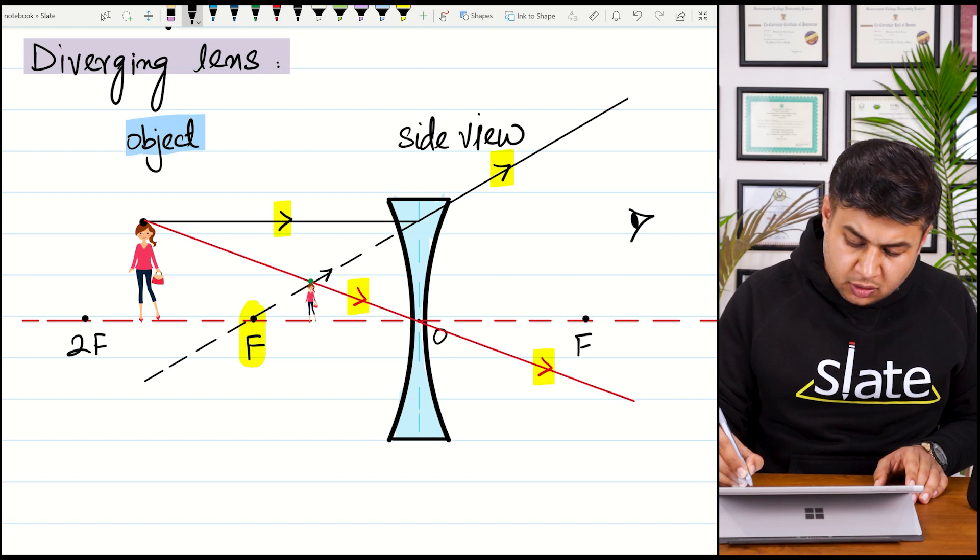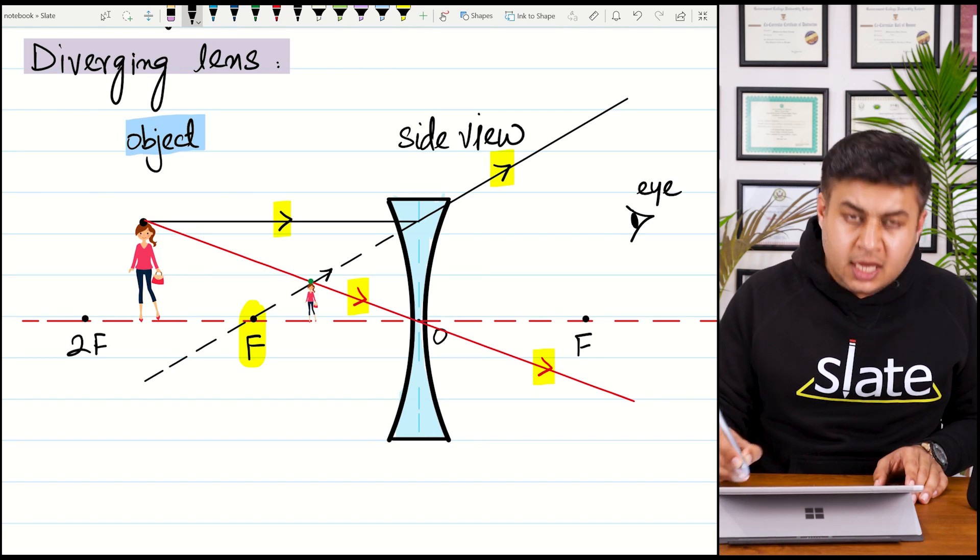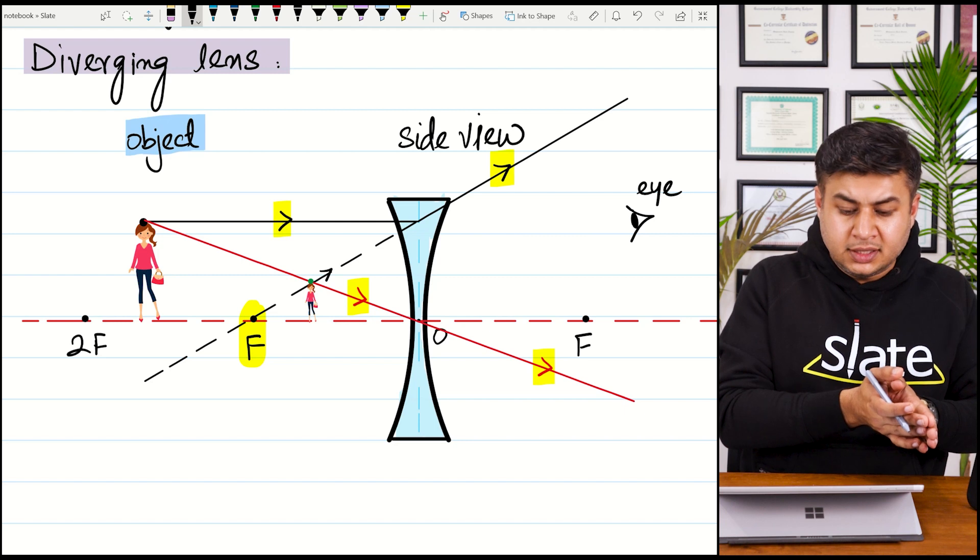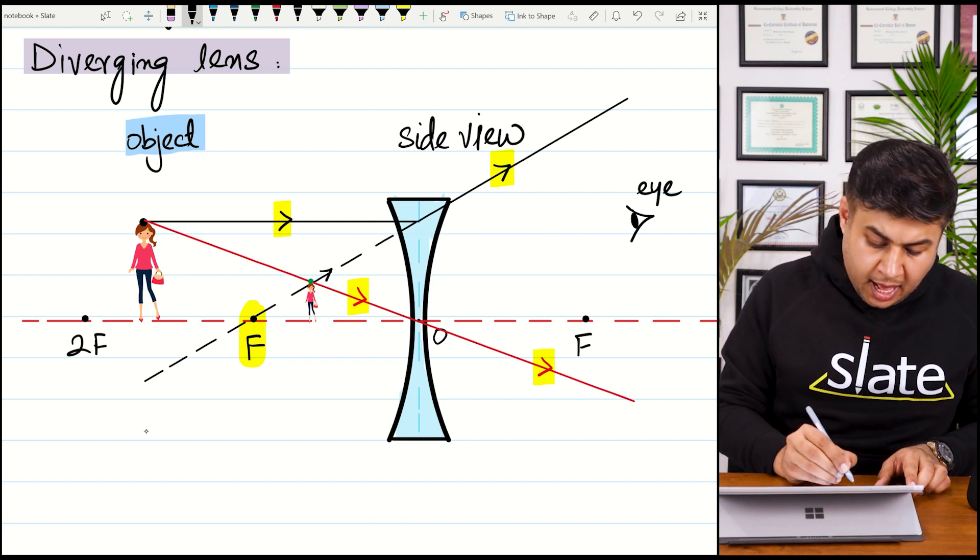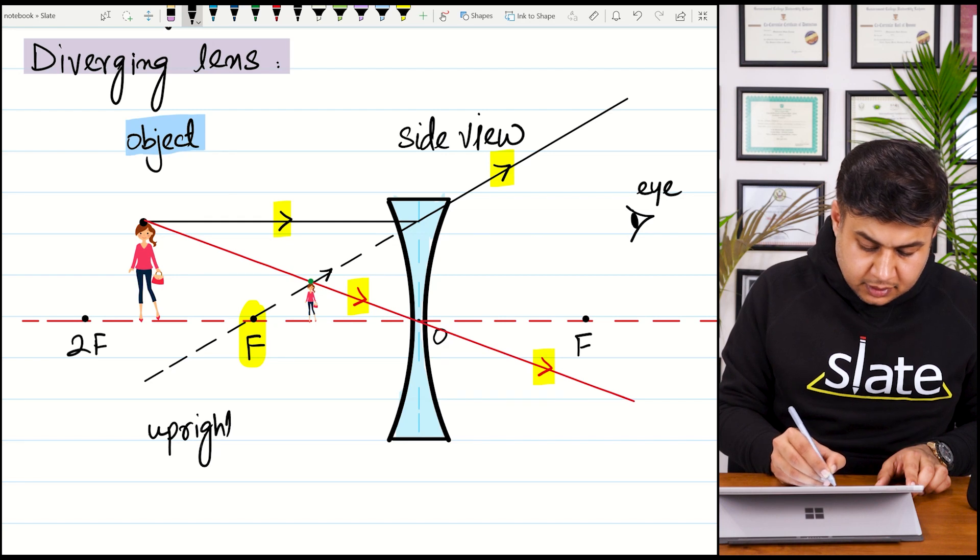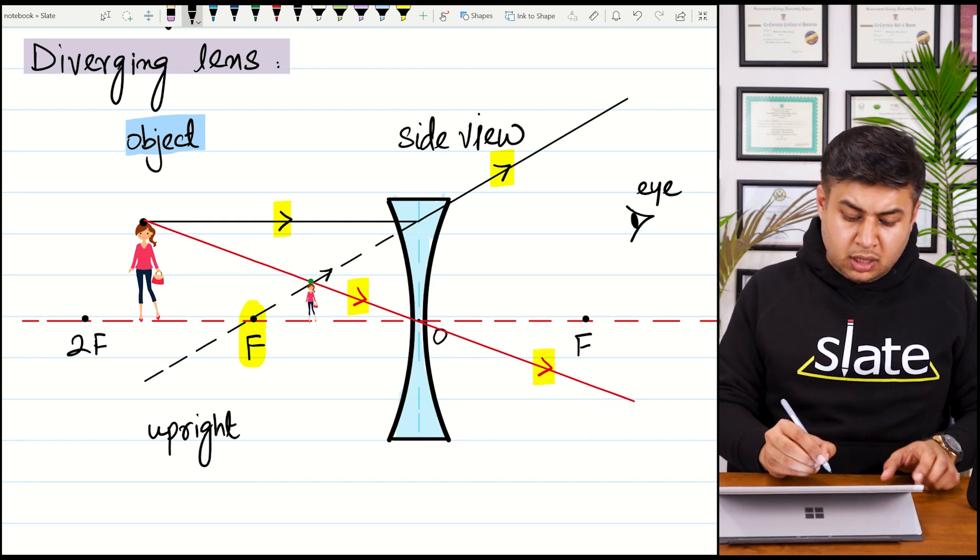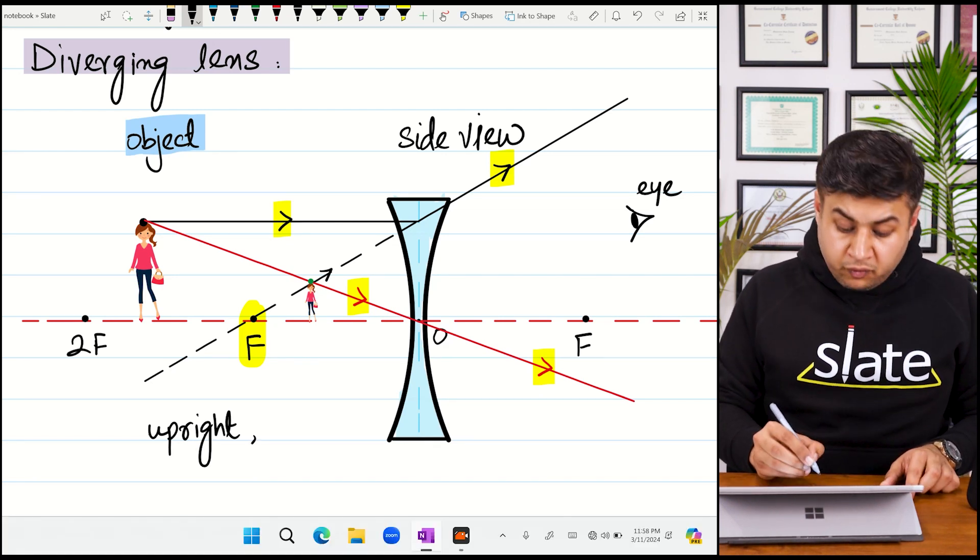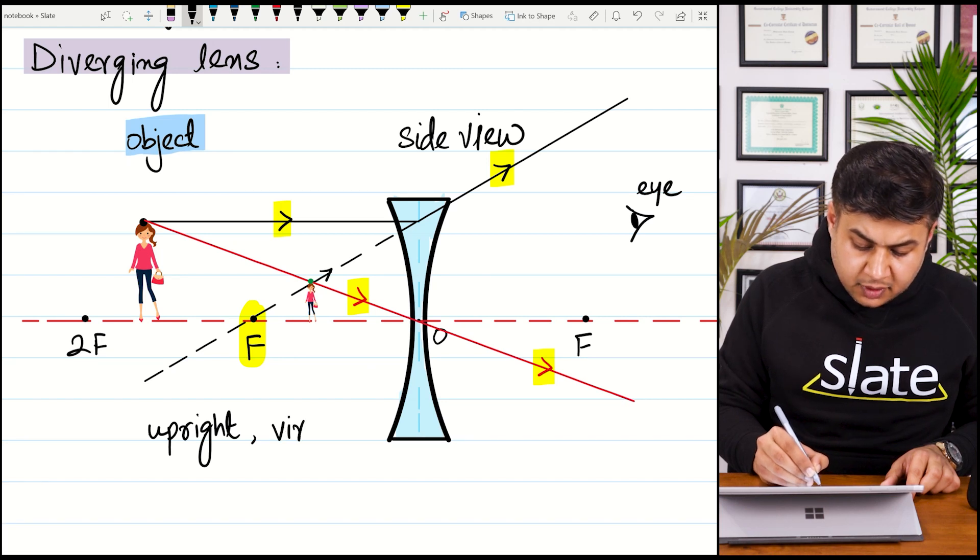will see the image at the same side of the lens, which is upright. It is a virtual image. Why is it a virtual image?